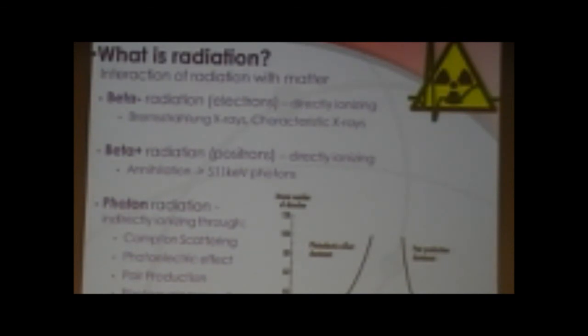And Bremsstrahlung x-rays, you can pretty much imagine like interactions with the core. You can imagine it like planet Earth, for example, and a comet going around it. It gets attracted by or deflected by Earth's gravity, and the same sort of happens to the charged particle, the electron. As it gets deflected around the nucleus, it loses energy. That energy is given off in the form of an x-ray as well. So-called Bremsstrahlung, even in English, even though it's a German word.